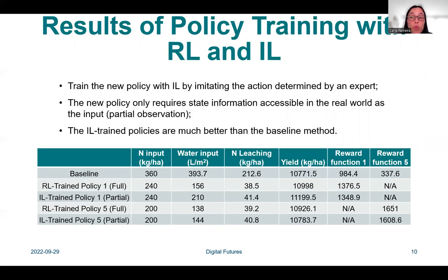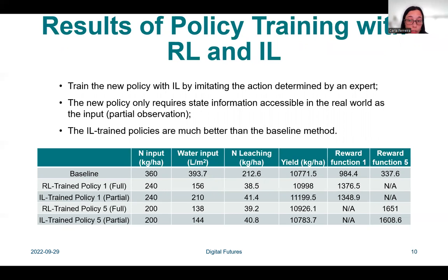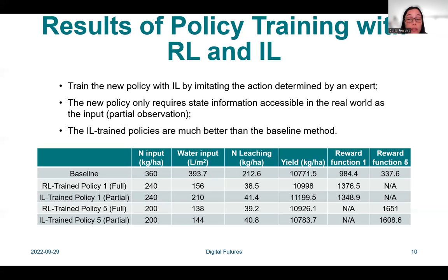With imitation learning, the policies were trained by imitating the actions determined by the experts — which are the previously reinforcement learning trained policies — under full observation. We ran the simulations with the expert policies to create demonstrations and stored the generated pairs of observations and actions. We conducted two experiments with imitation learning: one using trained policy one as the expert and the other with trained policy five. The results demonstrate that the imitation learning trained policies achieve similar results compared to those from reinforcement learning trained policies. The imitation learning trained policies under partial observation also achieved higher cumulative rewards compared to the baseline policy with both reward functions one and five, and the actions determined by imitation learning policies are much better than the baseline method.